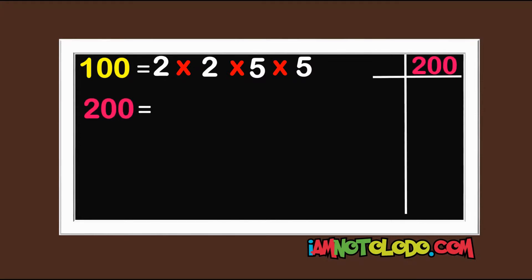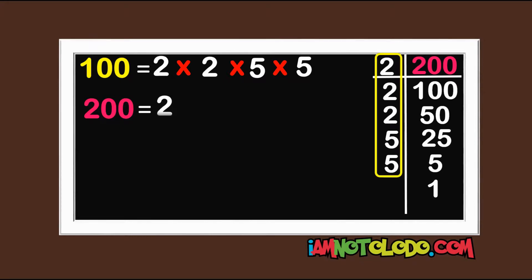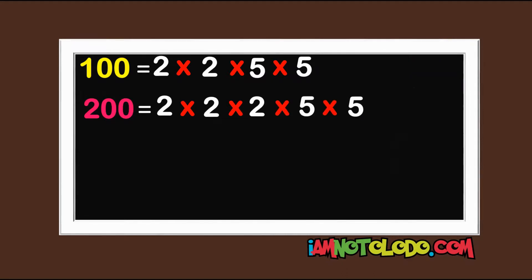So 2 in 200 is 100, 2 in 100 is 50, 2 in 50 is 25, 5 in 25 is 5, 5 in 5 is 1. So let's write this: 2 times 2 times 2 times 5 times 5. 2 is here, 2 is here — circulate.